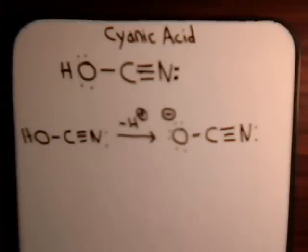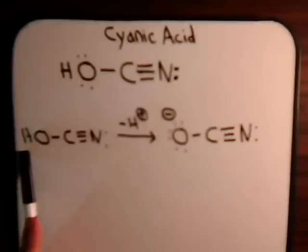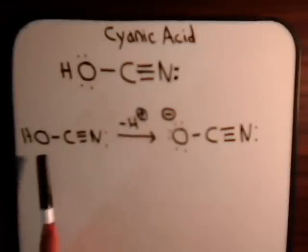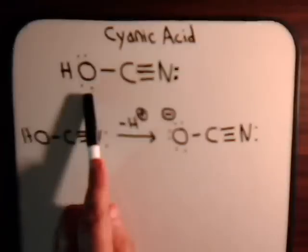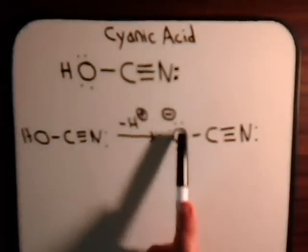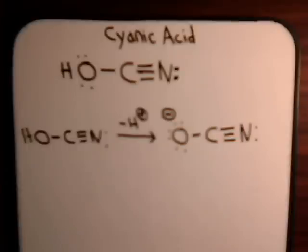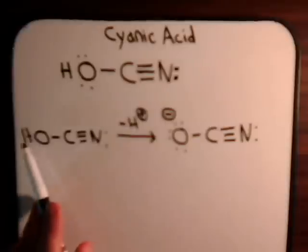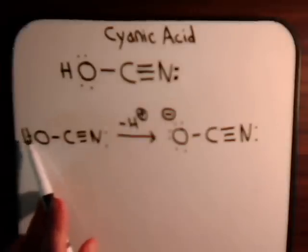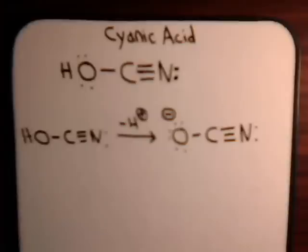Now when cyanic acid loses the proton, this oxygen is no longer sp2 hybridized — it is now sp hybridized. This oxygen has an extra electron because it was sharing the electron with hydrogen; the proton went away leaving the electron behind, and of course the oxygen now has a negative charge.